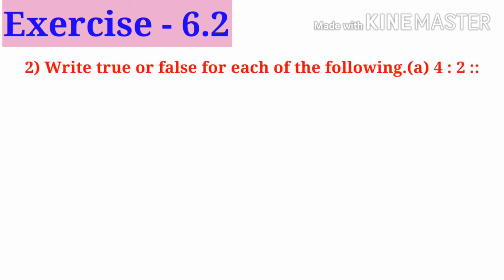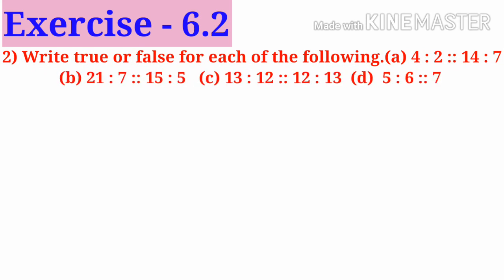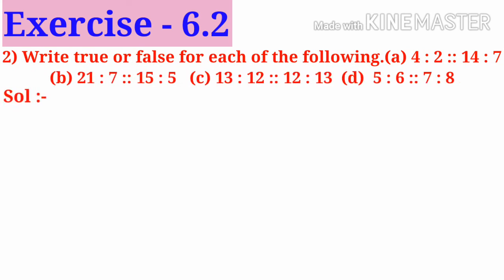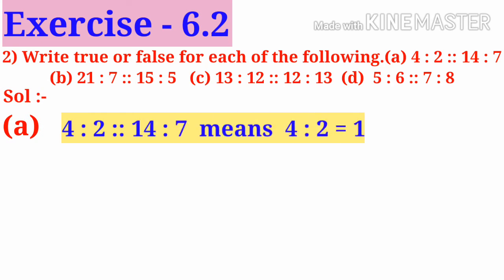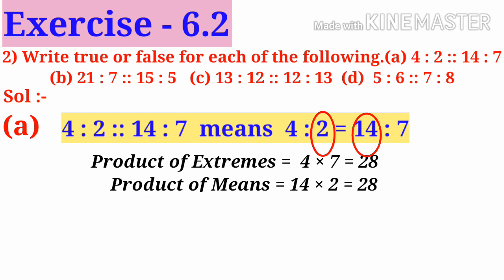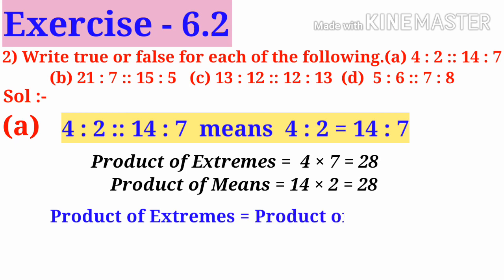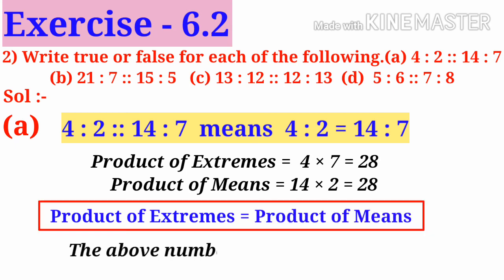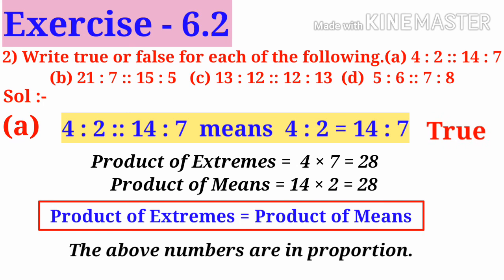Next number 2: Write true or false for each of the following — A, B, C, D. Solution. First problem A: 4 is to 2 is as 14 is to 7, meaning 4 is to 2 is equal to 14 is to 7. Take the extreme values 4 and 7. Take the product: 4 into 7 is 28. Take the middle terms 2 and 14: 14 into 2 is 28. Both are equal. So product of extremes is equal to product of means. So the above numbers are in proportion, so the statement is true.